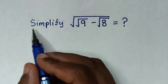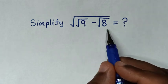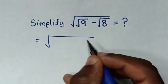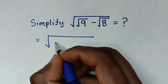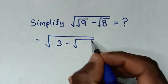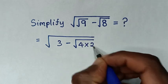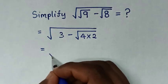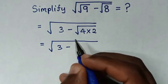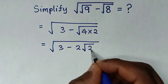How to simplify square root of square root of 9 minus square root of 8. So it will be equal to: square root of 9 is 3, then minus square root of 8, which is the same as square root of 4 times 2. Then it will be equal to square root of 3 minus square root of 4 is 2, then times square root of 2.